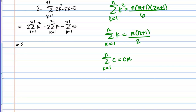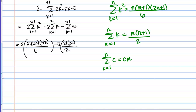On the first piece, I have my 2 out front, and I'm going to use the K squared formula with N equals 21. I get 21 times 22 times — 2N plus 1 is 2 times 21 equals 42 plus 1 is 43 — all over 6. Minus 2, and now I need my K formula with N equals 21, which gives me 21 times 22 over 2. Then minus the constant formula: 5 times 21.